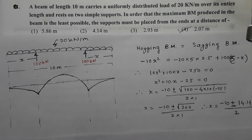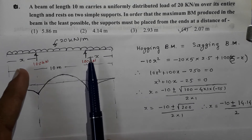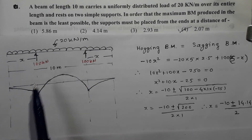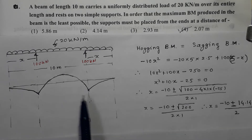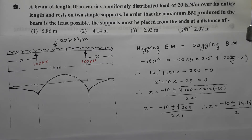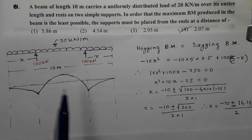If I move the supports closer to one another, it will result in increasing the length of the overhangs. If the length of the overhangs increases, the hogging bending moment also increases. There will be an increase in hogging bending moment if the supports are brought closer. If the hogging bending moment increases, it results in decrease in sagging bending moment. On the contrary, if the supports are moved away from one another, the overhangs decrease, the hogging bending moment decreases, and the sagging bending moment increases. So these two are opposite to one another.